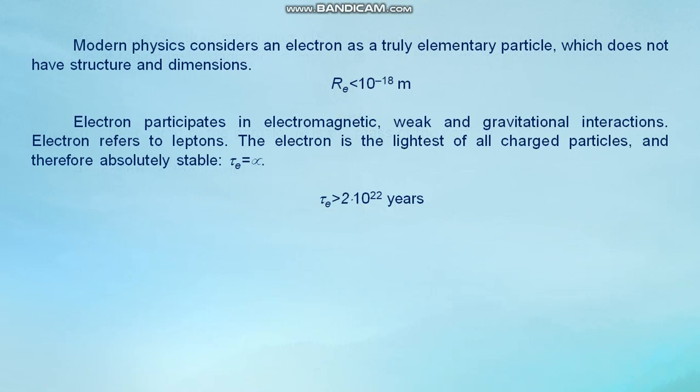Modern physics considers an electron is a truly elementary particle which does not have structure and dimensions. Electron radius less than 10⁻¹⁸ meter. Electron participates in electromagnetic, weak, and gravitational interactions. Electron refers to leptons. The electron is the lightest of all charged particles and therefore absolutely stable. τ is greater than 2×10²² years.